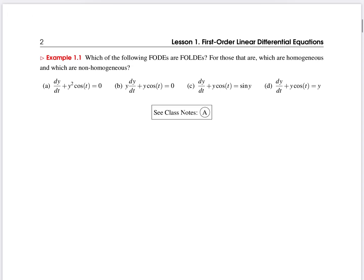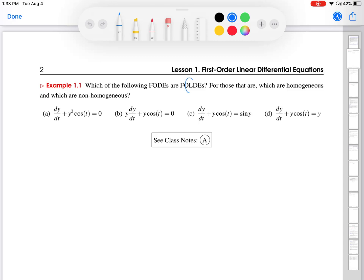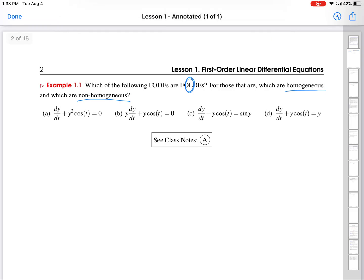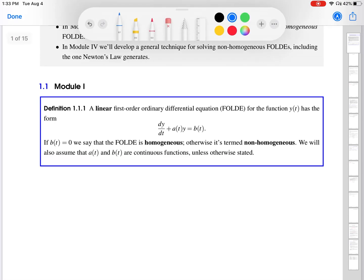I want to leave lots of white space to make sure we can solve everything in the file. So, I'm going to scroll down to the first example, example 1.1, and this one asks, which of the following folds are folds? So, the first thing to notice here is that we're really asking a question about linearity, right?